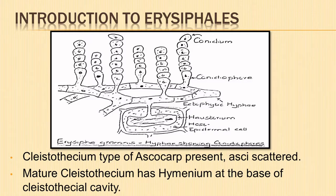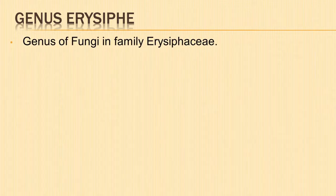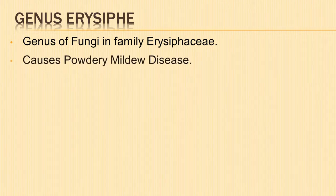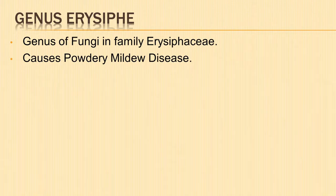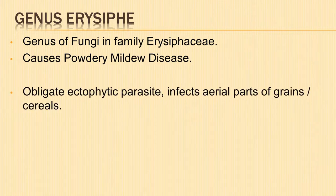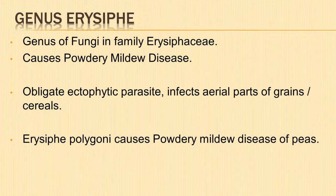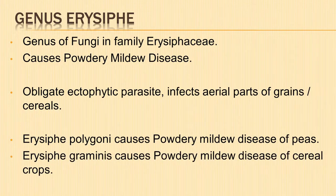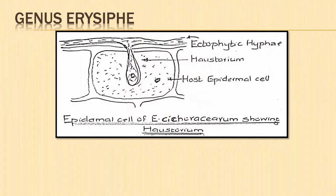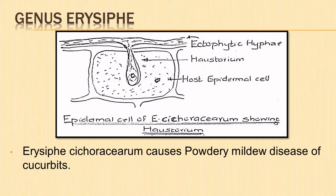Let us take Erysiphe as a type to illustrate the pattern of life cycle. It is a genus of fungi in the family Erysiphaceae. Many species of this genus are plant pathogens which cause powdery mildew. They are obligate ectophytic parasites which infect a large number of species of angiosperms, particularly the grains or cereals. They occur in aerial parts causing powdery mildew. Erysiphe polygoni causes powdery mildew disease of peas. Erysiphe graminis causes powdery mildew of cereal crops such as wheat and barley. Erysiphe cichoracearum is the causal agent of powdery mildew of cucurbits.